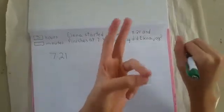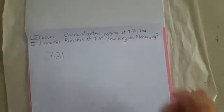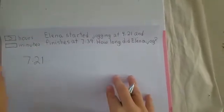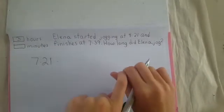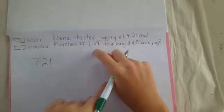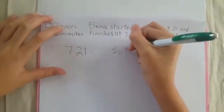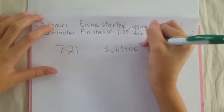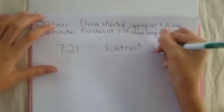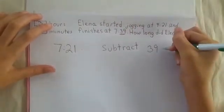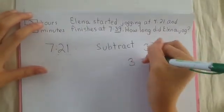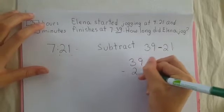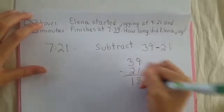Step two. Now let's look at the minutes. Remember, after adding three hours, it's 7:21. How many minutes remain before 7:39? We have to subtract: 39 minus 21. That gives us 18. So there will be 18 minutes.